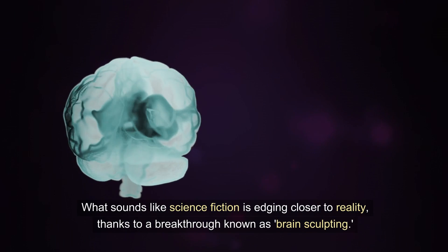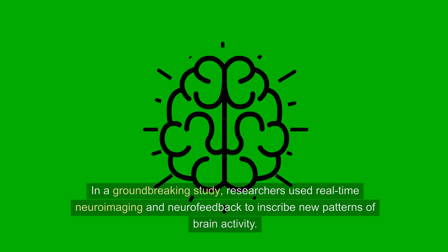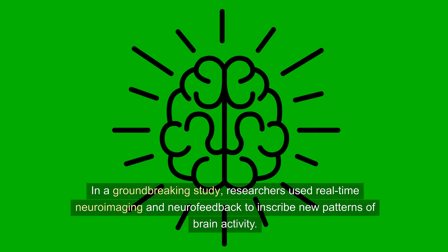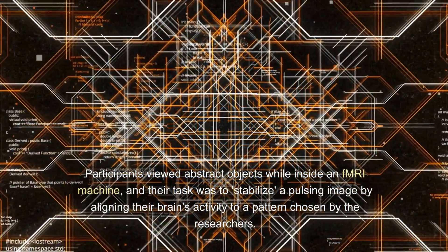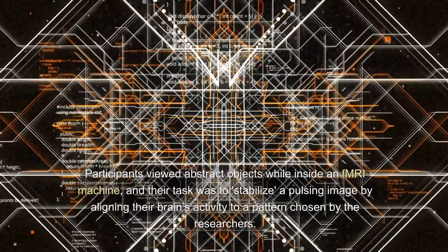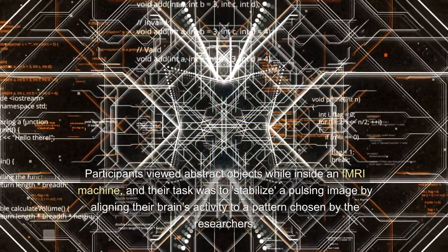In a groundbreaking study, researchers used real-time neuroimaging and neurofeedback to inscribe new patterns of brain activity. Participants viewed abstract objects while inside an fMRI machine, and their task was to stabilize a pulsing image by aligning their brain's activity to a pattern chosen by the researchers.